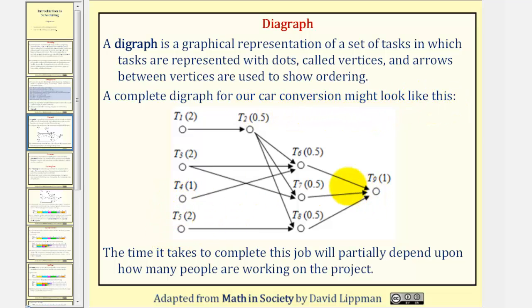Notice how there are nine tasks, T sub one through T sub nine. If we look at task one just for a moment, notice how task two, as well as tasks six, seven, eight, and nine cannot be completed until first task one is completed. The time it takes to complete this job will partially depend upon how many people are working on the project.